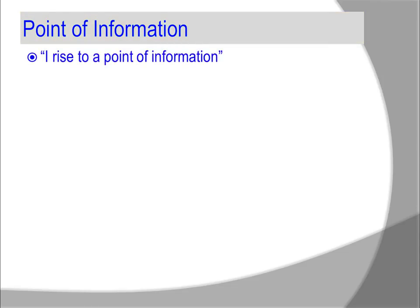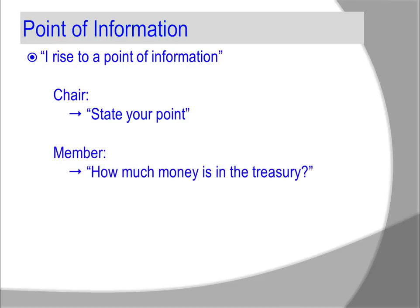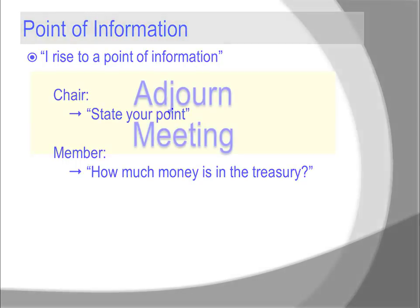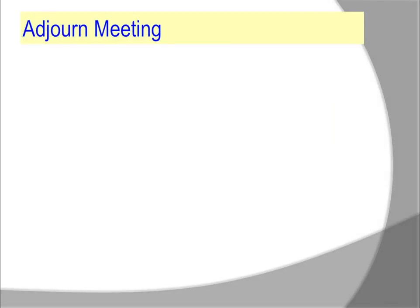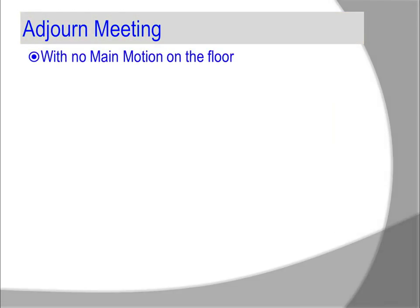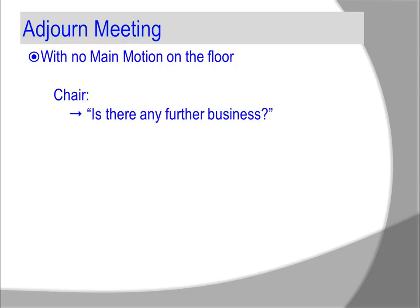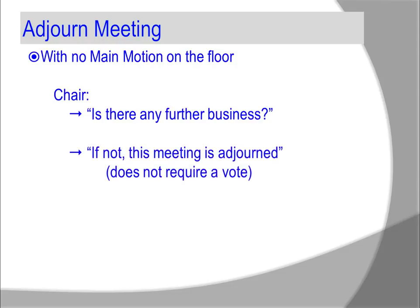How about a point of information? 'I rise to a point of information.' The chair states 'State your point,' and the member responds, for example, 'How much money is in the treasury?' Adjourning a meeting can be straightforward. To adjourn a meeting with no main motion on the floor, the chair states 'Is there any further business? If not, this meeting is adjourned.' It does not require a vote.